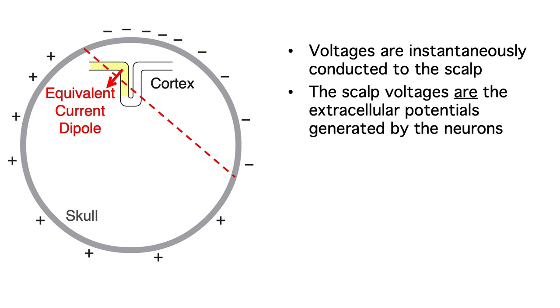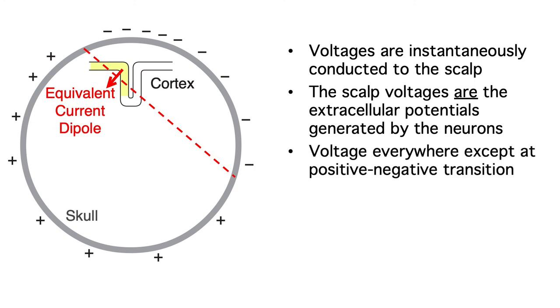This is very different from fMRI, where you're seeing the effects of neural activity on blood oxygenation, which takes several seconds. A third point is that a given ERP is negative on one side of the head and positive on the other side, with voltage everywhere except at the negative to positive transition.